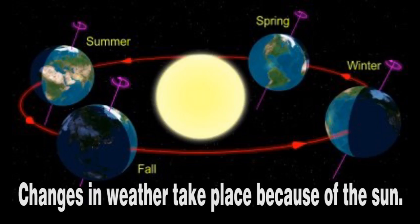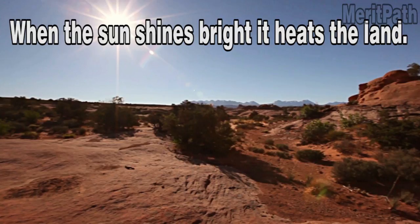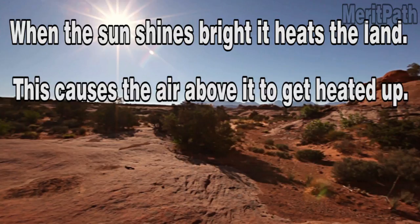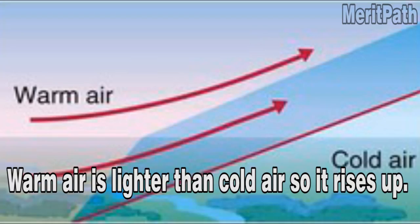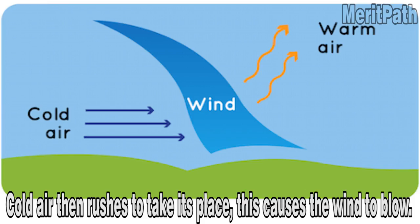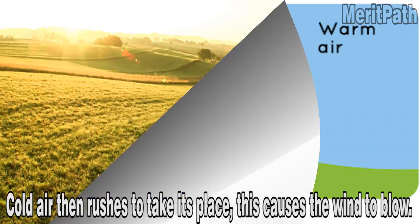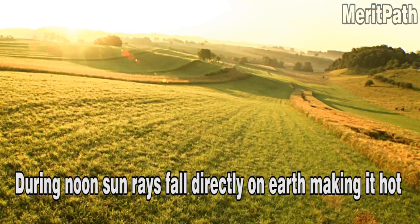Changes in weather take place because of the Sun. When the Sun shines bright, it heats the land, which causes the air above it to get heated up. Warm air is lighter than cold air, so it rises up, and cold air rushes in to take its place. This causes the wind to blow. During noon, sun rays fall directly on Earth making it hot.